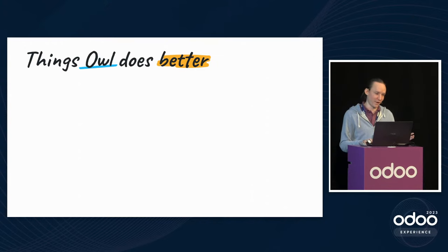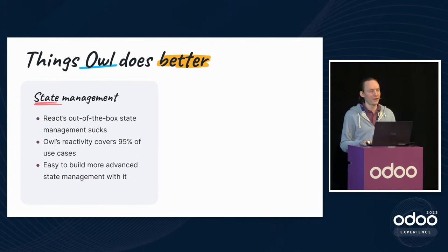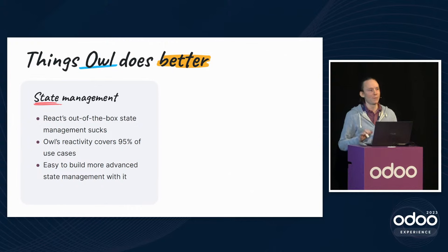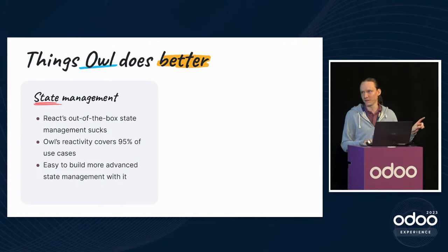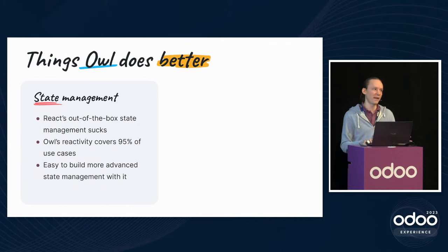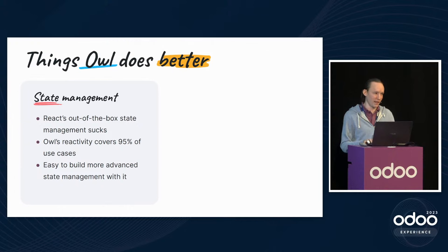There are things OWL does better than React. First, state management: React's built-in state management is really poor — it's mostly been pushed onto the community, requiring Redux or Zustand. In OWL, reactivity works out of the box. It's a great primitive on which to build more advanced state management systems. For complex applications like Odoo, the entire relational model for form views and list views is built on top of this reactivity system.